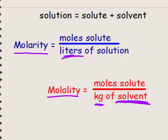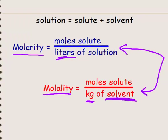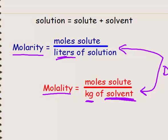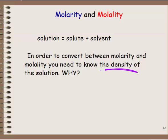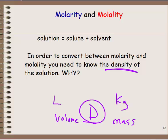We're going to be able to interchange or calculate between these two units as long as we know the density. Molarity has liters on the bottom, which is a volume, and molality has kilograms, which is a mass. As long as we know the density and the mass, we can calculate the volume, or with density and volume we can calculate the mass — that being the mass of the solution. Then we can figure out how many grams of the solvent we have, since we'll know how many grams of the solute.